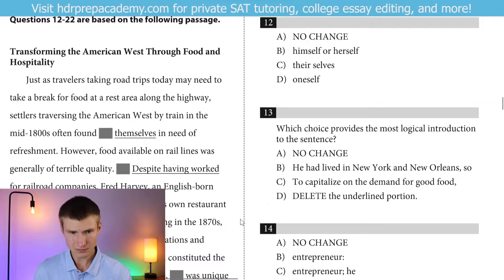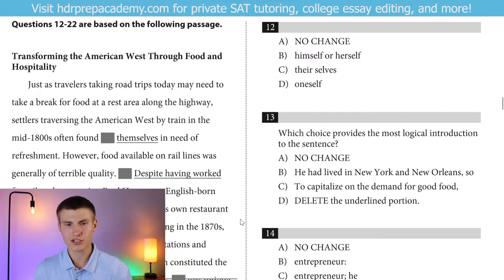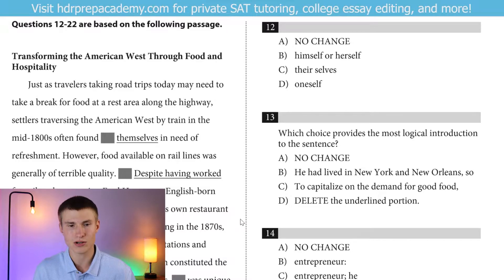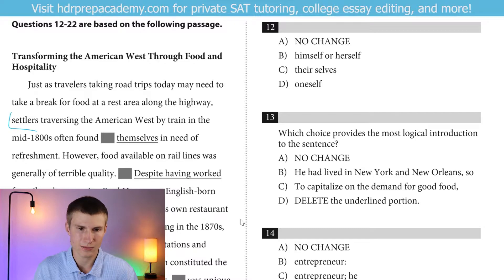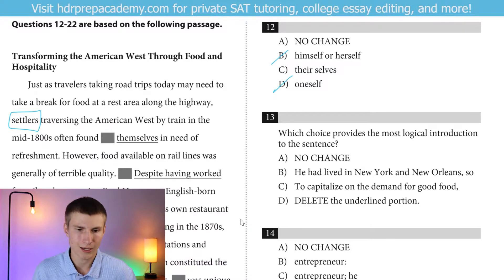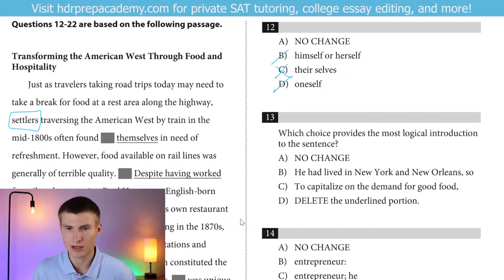Moving on to the next passage: 'Transforming the American West through food and hospitality.' Just as travelers taking road trips today may need to take a break for food at a rest stop along the highway, settlers traversing the American West by train in the mid-1800s often found themselves in need of refreshment. Notice I didn't have to pause there — 'themselves' makes perfect sense. It's referring to the subject 'settlers,' which is plural, so we need that plural pronoun 'themselves.' We wouldn't say 'their selves' — we say 'themselves.'